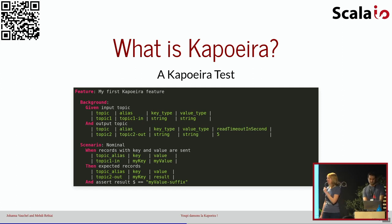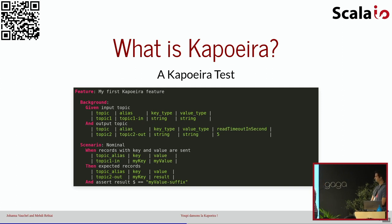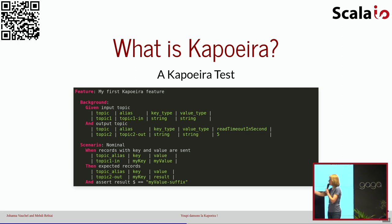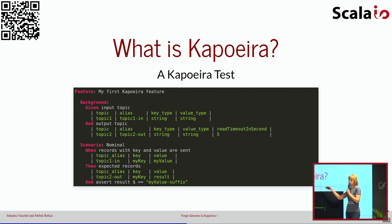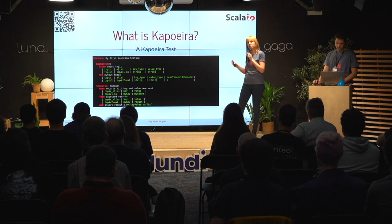C'est ce qu'on a fait : on a créé cet outil, d'où le nom Capoeira, parce que c'est fortement inspiré de Karate. On va vous présenter en exclusivité à Scala.io ce qu'est un test Capoeira. Le voici — ça va être simplement un fichier texte tout simple. On va utiliser l'extension .feature. Dans ce fichier texte, on va retrouver une certaine syntaxe. Premièrement, on va décrire, avec la syntaxe feature, quelles fonctionnalités on va vouloir tester.